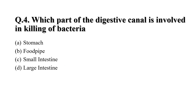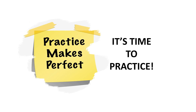Question 4: Which part of the digestive canal is involved in killing of bacteria? Option A: Stomach. Option B: Food pipe. Option C: Small intestine. Option D: Large intestine. Your correct answer is Option A — the stomach. Practice makes perfect.